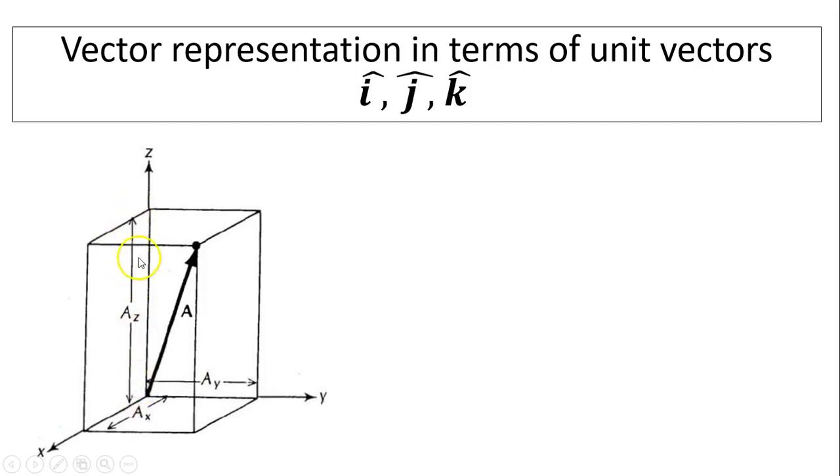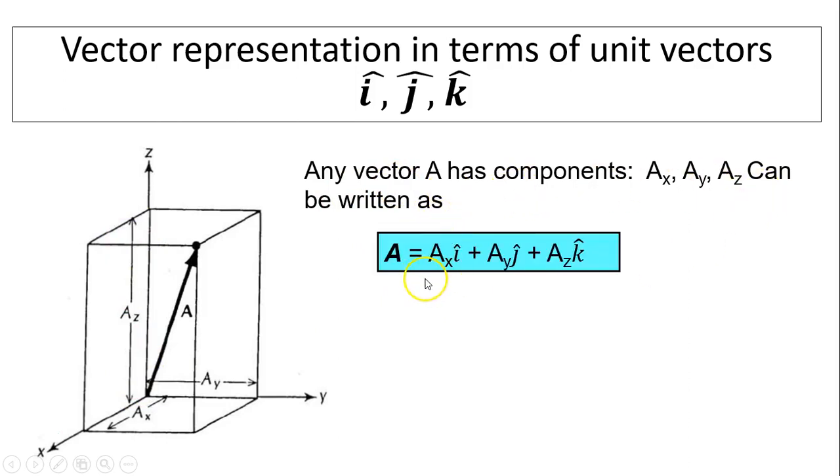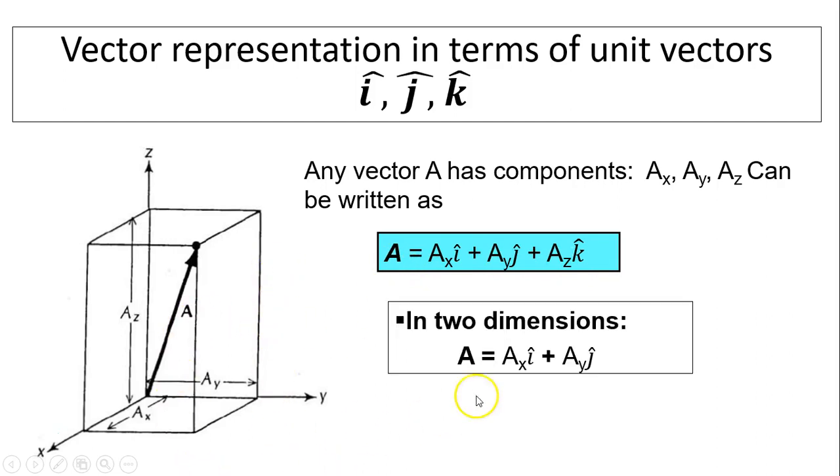So any vector with three components can be written as this: vector ax plus vector ay plus vector az gives you vector a. Now obviously in two dimensions you don't have k because az equals 0. So a equals axi plus ayj.